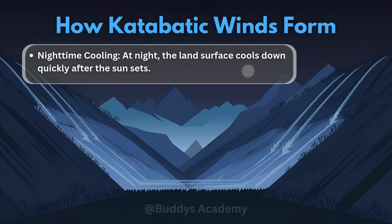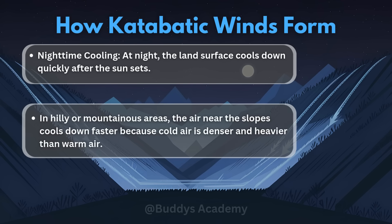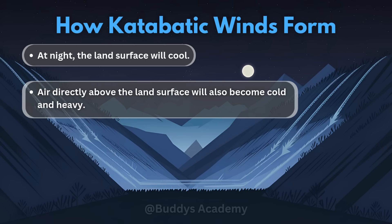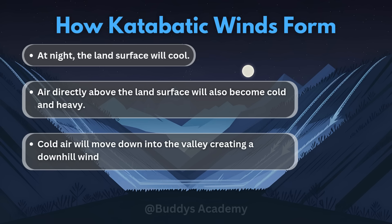So how do katabatic winds form? The first factor would be nighttime cooling. At night, the land surface cools down quickly after the sun sets, and in hilly or mountainous areas the air near the slopes cools down faster because cold air is denser and heavier than warm air. Basically, at night your land surface cools and the air directly above it also becomes cold and heavy, so this cold air will then move down the slope and into the valley, creating a downhill wind.